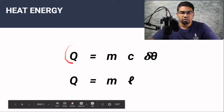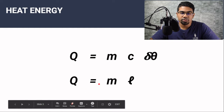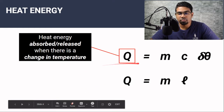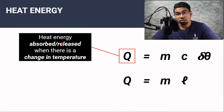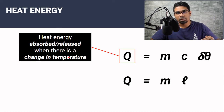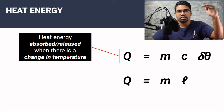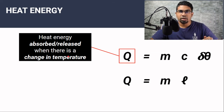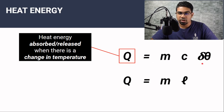These are the two formulas: Q equals MC delta theta, and Q equals ML. In both cases Q represents heat energy. In the first formula, Q is the heat energy that is absorbed or released when there is a change in temperature. When heat is absorbed, the temperature goes up; when heat is released, the temperature of a substance goes down. When this change in temperature is going on, we use this formula.